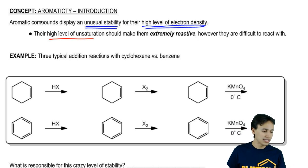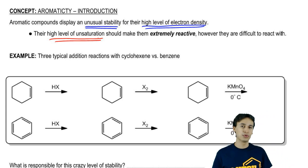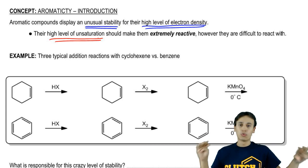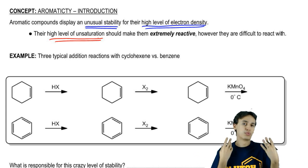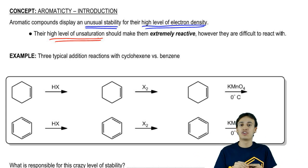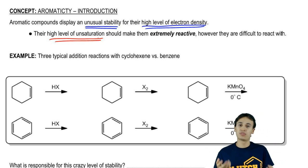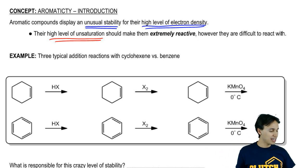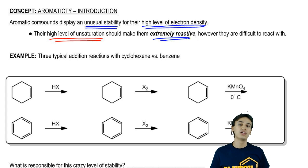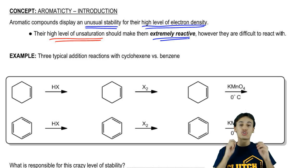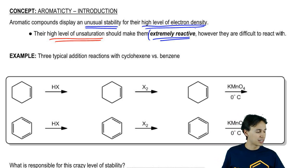Their high level of unsaturation, if you guys remember what the word unsaturation means, it means that everything is not a single bond. It means that you have double bonds, you have rings, stuff that's making hydrogens less prominent on the molecule. Whenever you have such a high level of unsaturation, you would predict that there would be a very high reactivity of that molecule.